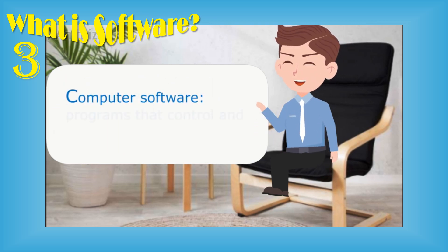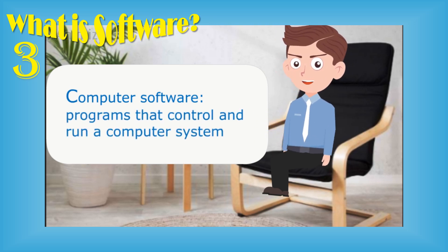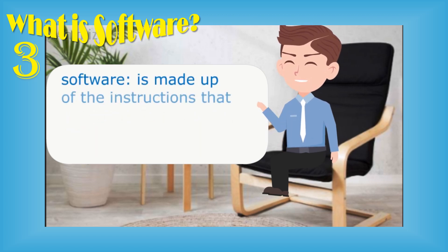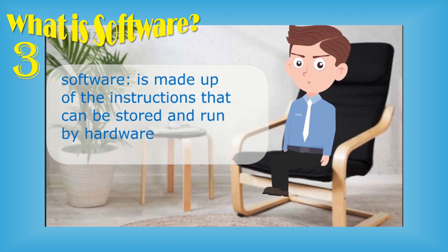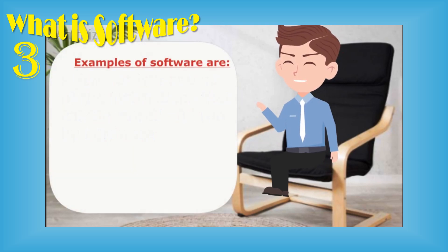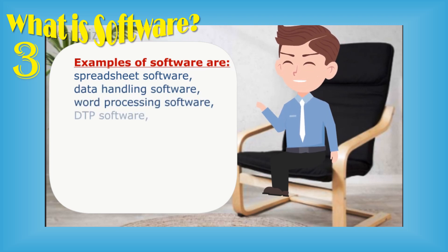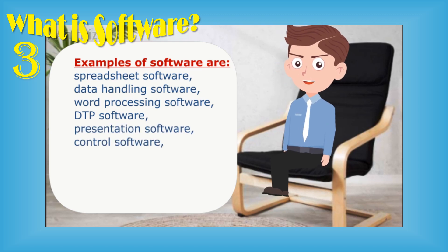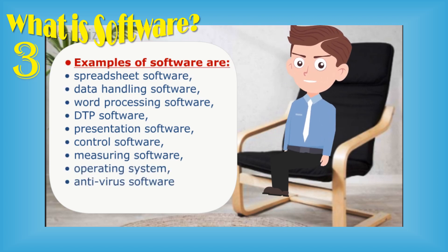On the other hand, computer software refers to all the programs that control and run a computer system. Software is made up of instructions that can be stored and run by hardware. Examples of software are spreadsheet software, data handling software, web processing software, DTP software, presentation software, control software, measuring software, operating system, and antivirus software.